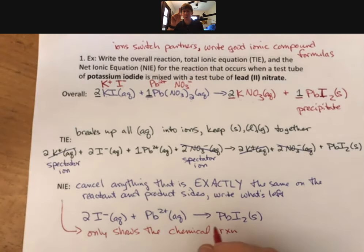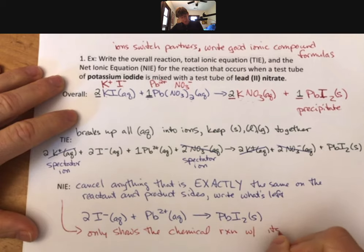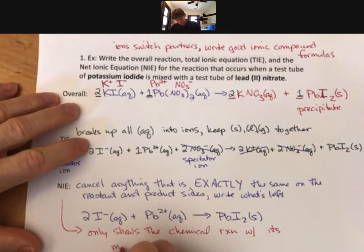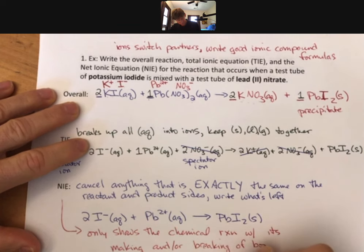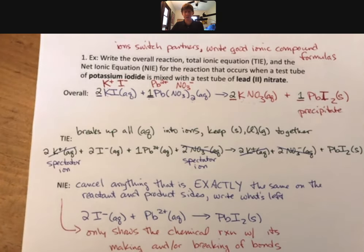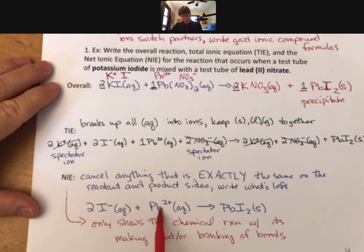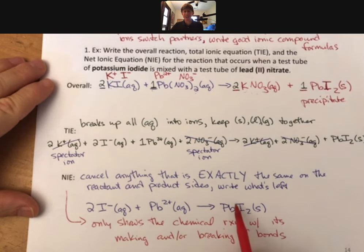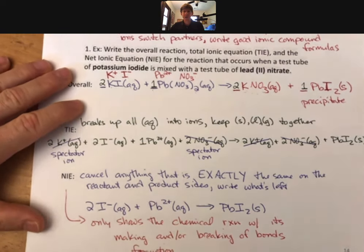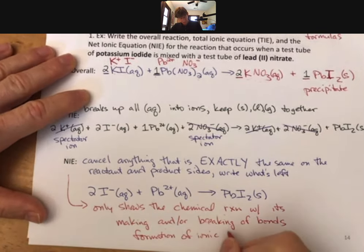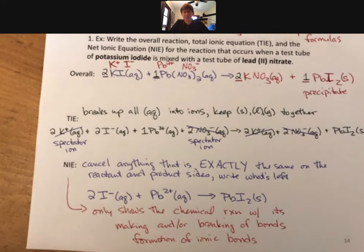And the net ionic equation only shows the chemical reaction involving the formation and/or breaking of bonds. So it only shows the chemical reaction with its making and/or breaking of bonds. And we can ask, the net ionic equation is this a chemical reaction? And if so, what kind of chemical bond formed? Here we have two ionic species, here we have them united together as a bond, as bonded. So this has formation of ionic bonds. Oh well, formation of ionic bonds. This is a true chemical reaction because chemical reactions of ionic bonds make and/or break bonds. Here we are making bonds.